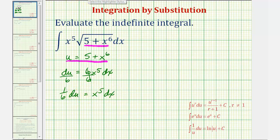So now using this equation we can also perform a substitution for x to the fifth dx and write this integral in terms of u. So in terms of u, again, x to the fifth dx is equal to one-sixth du.